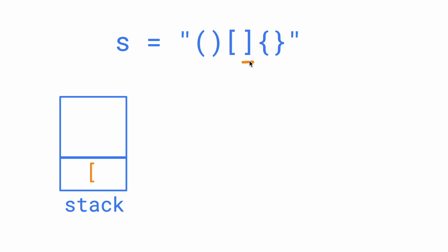The next character is a small closing bracket. The peak element of the stack is the same type of opening bracket, so we pop it. Next character is a big opening bracket — since it is an opening bracket, we push it into the stack. Next character is a big closing bracket, so we check the stack: the peak is big opening, so we pop it. Next is a middle opening bracket, so we push it.